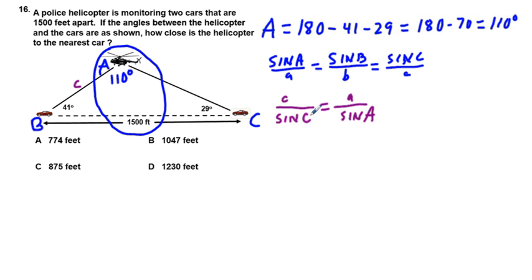Okay, now we've worked that out, let's fill in. So we have C over sine C, which is going to be sine of 29 degrees, is equal to little a, and little a is 1500 feet over the sine of 110 degrees.